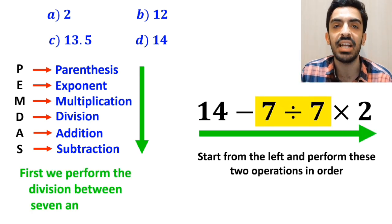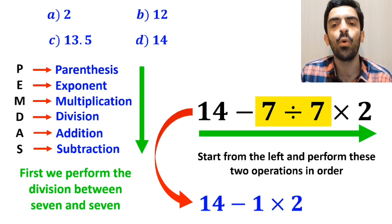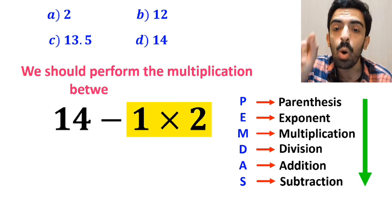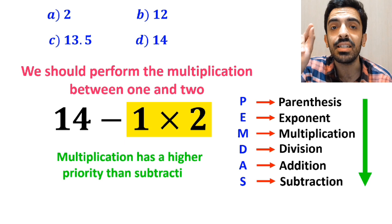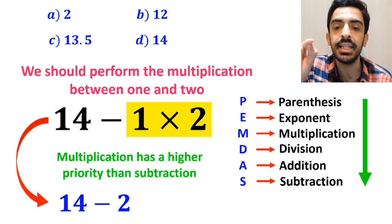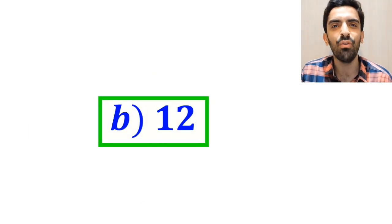First we perform the division between 7 and 7, and instead of the original expression we can write 14 minus 1 then times 2. The next step, we should perform the multiplication between 1 and 2 because multiplication has a higher priority than subtraction. This expression simplifies to 14 minus 2. Finally, we get the answer 12. Therefore, option B is the correct answer to this question.